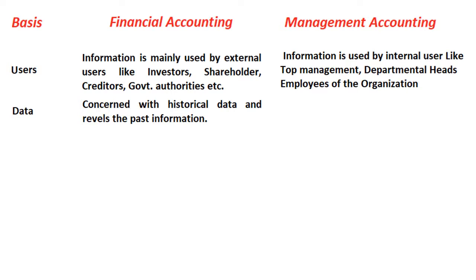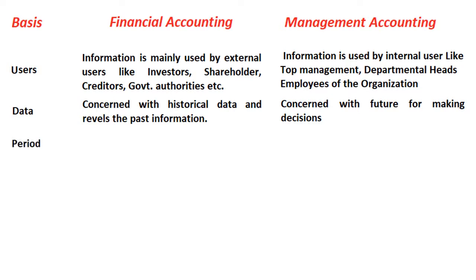The next difference is data orientation. Financial accounting data is past data — it is concerned with history. Whereas management accounting data is concerned with the future for making decisions. Management accounting data is basically future-oriented for decision-making by the management.